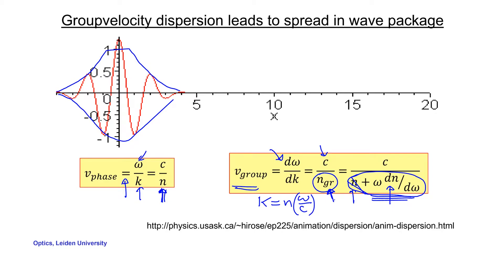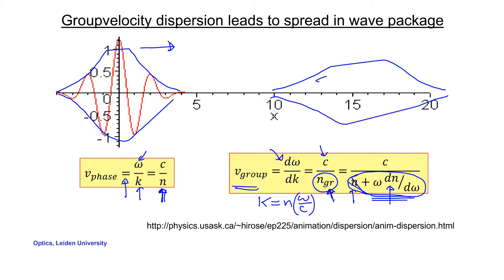Finally, if you look at the movie carefully, you would have seen that the wave package does not precisely retain its shape as it moves. Further along, the package was wider than when it started. So dispersion doesn't only influence propagation speeds — it also leads to a real spread in the wave package as a whole.